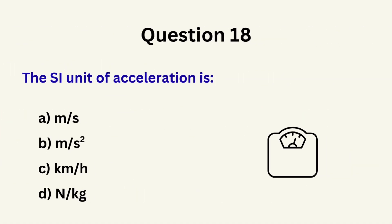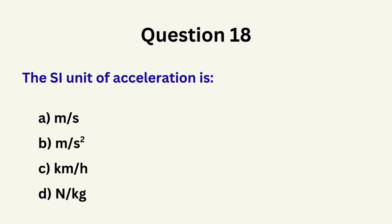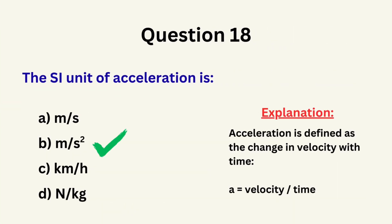Question 18: The SI unit of acceleration is... A. Meters per second, B. Meters per second squared, C. Kilometers per hour, D. Newtons per kilogram. The correct answer is B: meters per second squared.